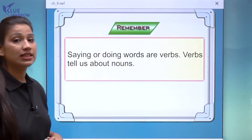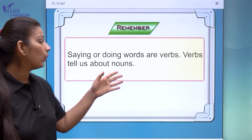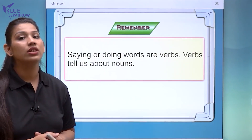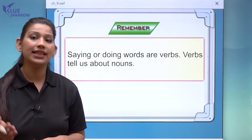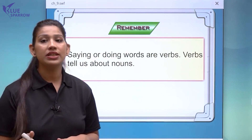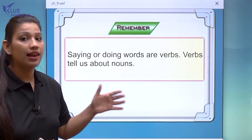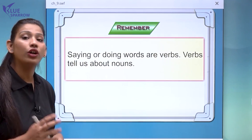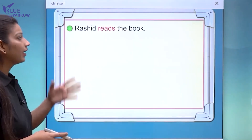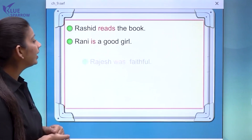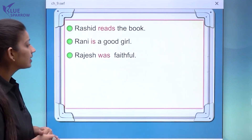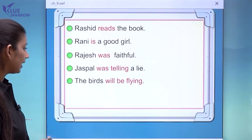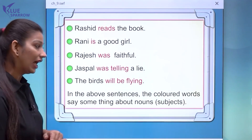Saying or doing words are called verbs. Verbs tell us about nouns — persons, places, animals, or things — and what they are doing. Verbs are also called action words or doing words. Here we read some sentences: 'Rashid reads the book.' 'Rani is a good girl.' 'Rajesh was faithful.' 'Jaspal was telling a lie.' 'The birds will be flying.'